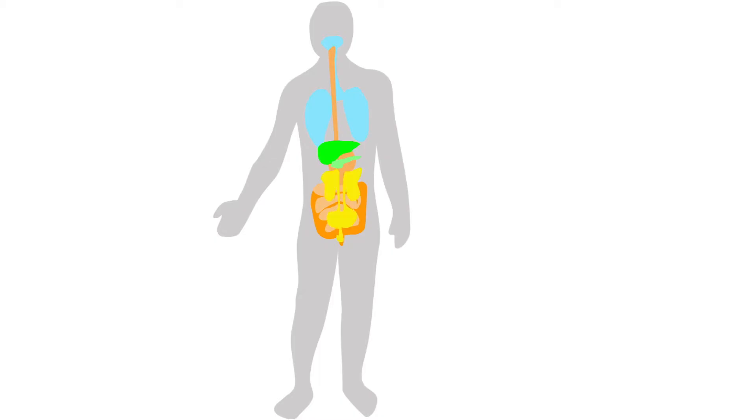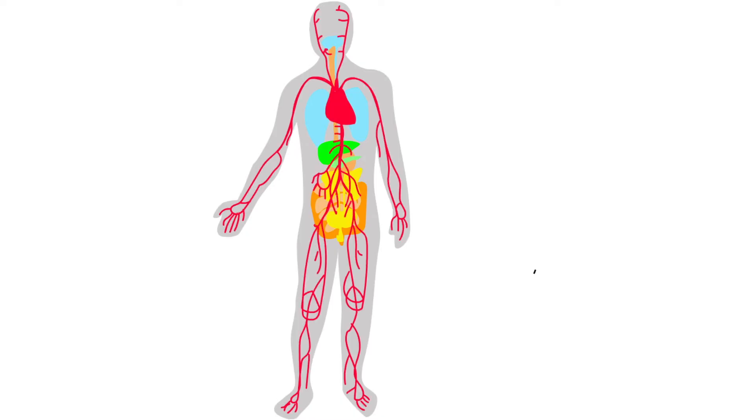In the genitourinary system, smoking causes cancer of the kidney, bladder, and cervix. Smoking also causes acute myeloid leukemia in the blood.